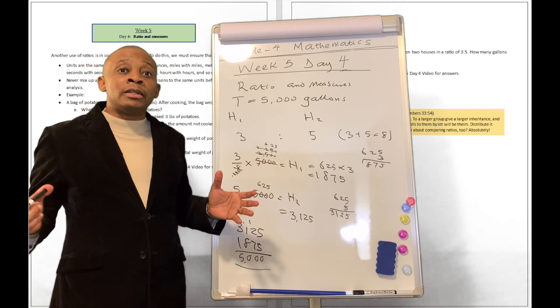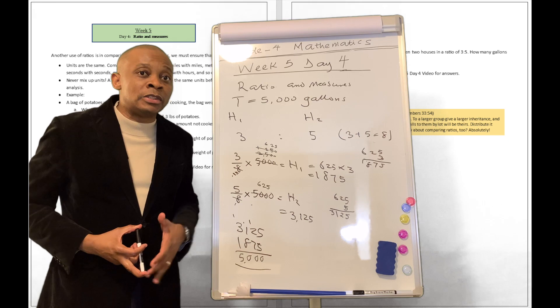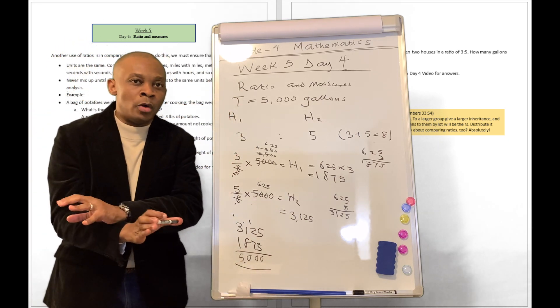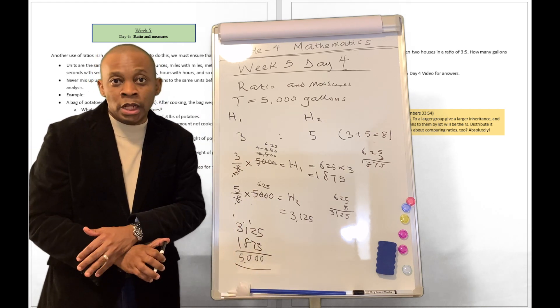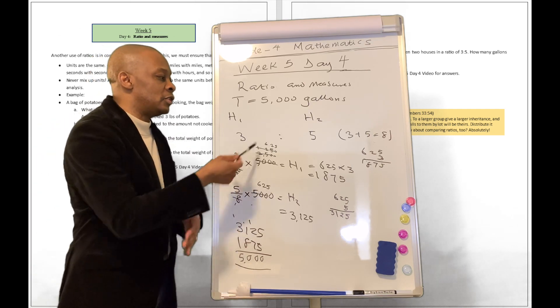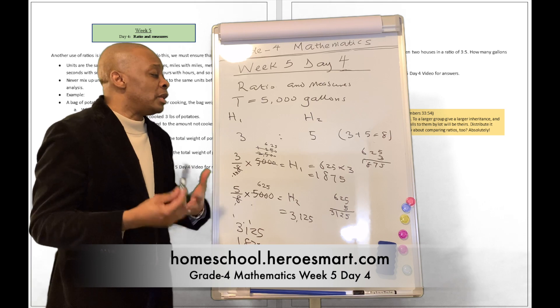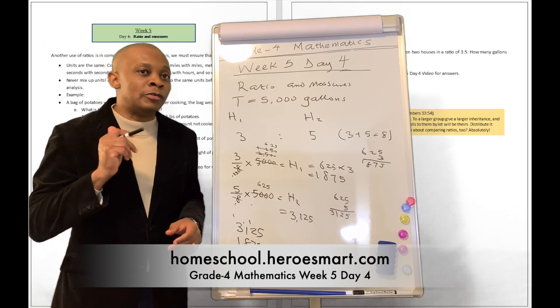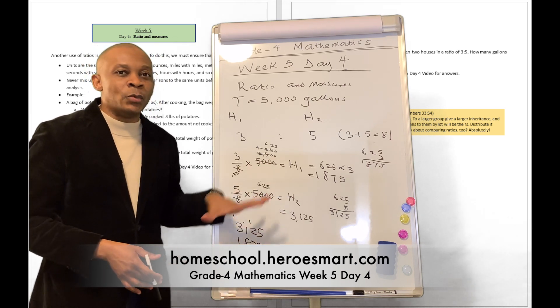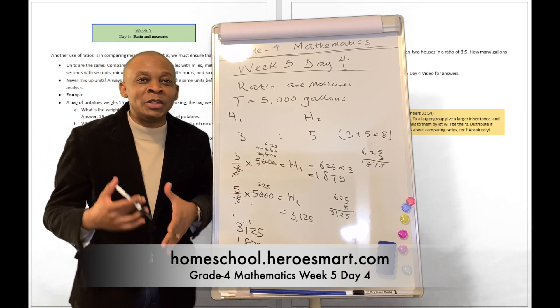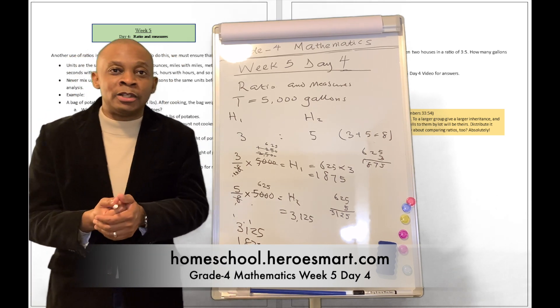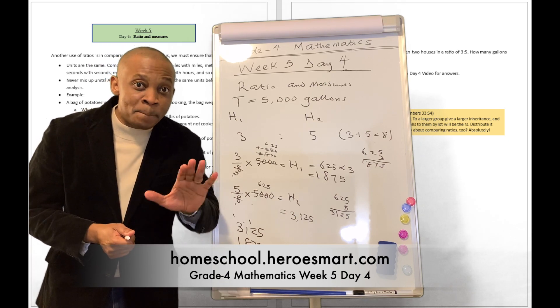That's how you can use ratio analysis, the concept of ratio analysis, to solve real-life problems. They've got 5,000 gallons of water. We've got two houses, and we know that house A compared to house B is going to mean 3 to 5 in terms of ratios. This is the way to do it. Thank you for joining me today. Remember, God cares about you, and so do we. Until next time, bye-bye.